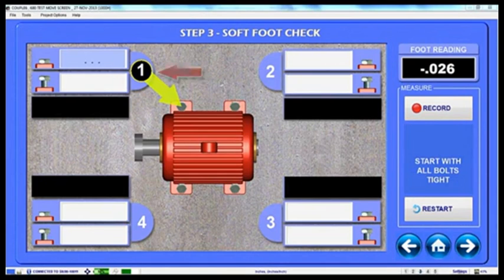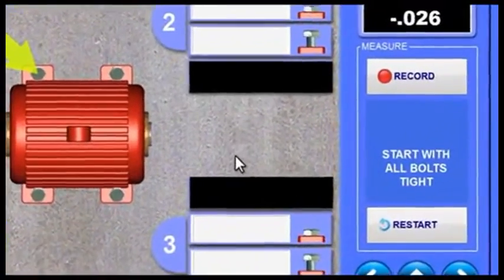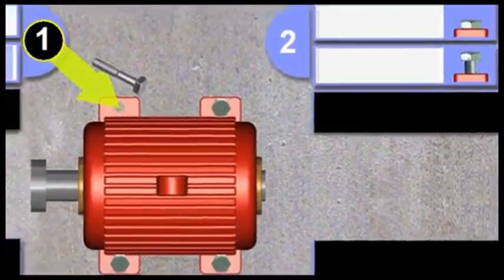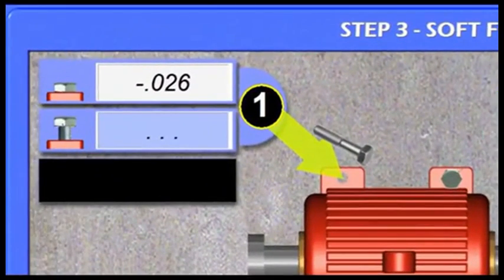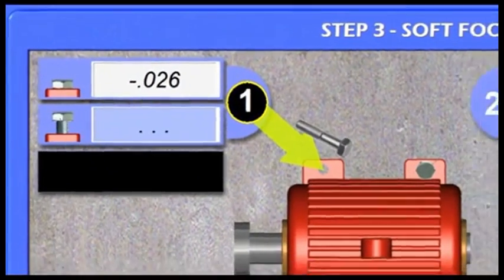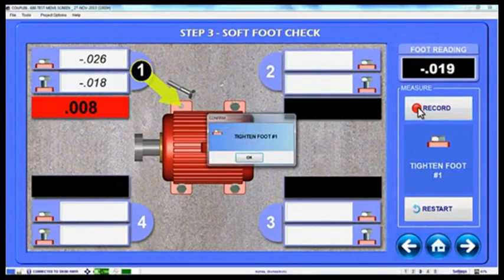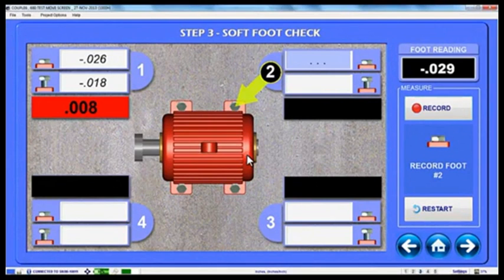You will notice on the screen there are four data taking areas, each representing one foot. To get started, make sure all four bolts are tight and then click the record button which records the data for foot number one. Loosen the bolt and click record again. If the foot movement is within tolerance, then the display will turn green. If not, it will turn red.